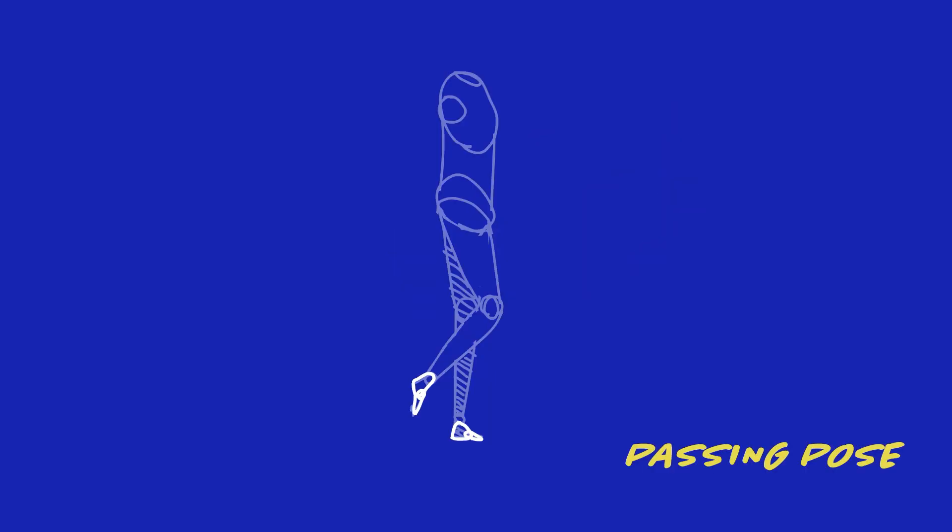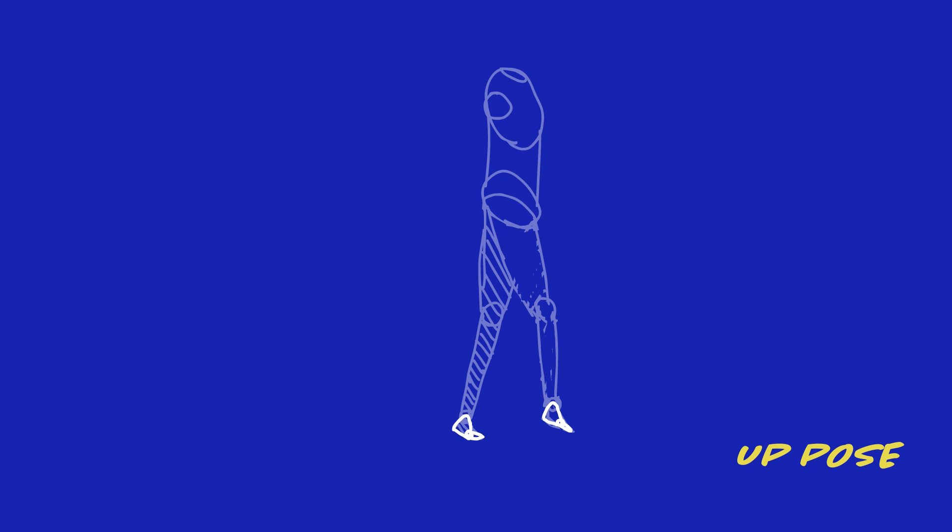This is the down pose on the other side — notice how the leg has moved and is raised a bit. The pivot now seems like it's on the toes. Then we have the passing pose where we lift the foot and place it in front. And now it's a complete loop — we're back to the contact pose.